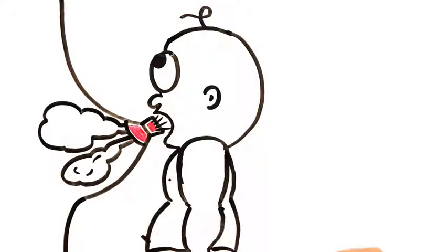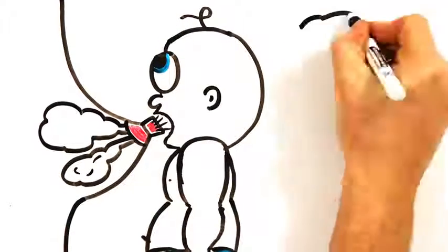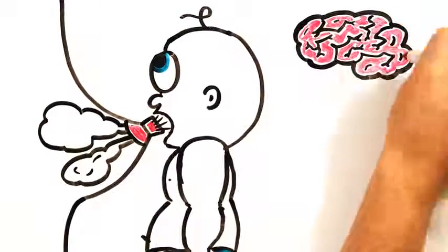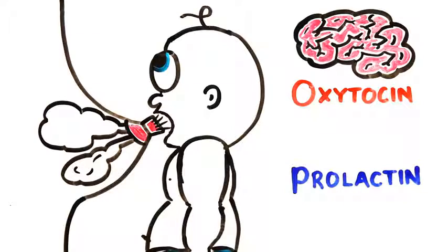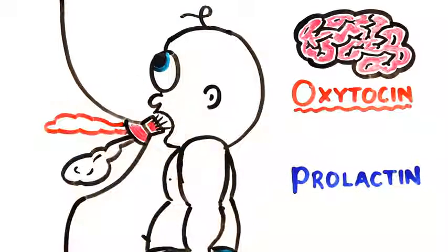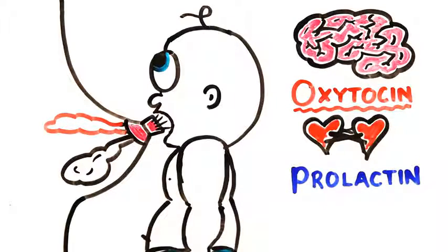After having a baby, receptors in the nipple detect when the baby begins to suckle, sending messages to the mother's brain, causing a release of oxytocin and continued production of prolactin. Oxytocin causes the cells that line the mammary glands to contract, and is also known as the cuddle hormone as it enhances the bonding experience between mother and child.